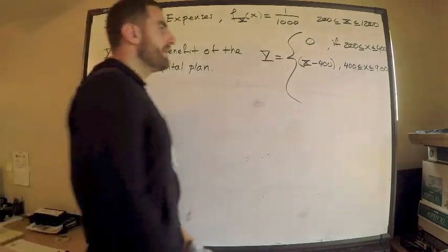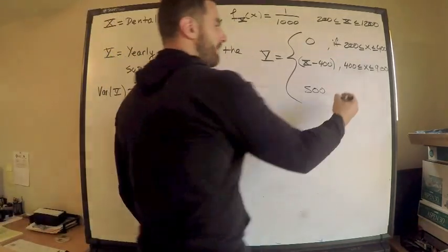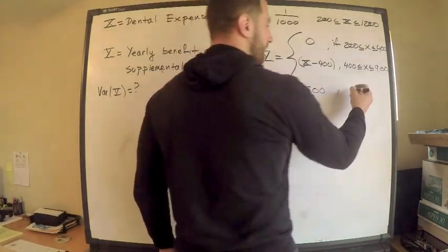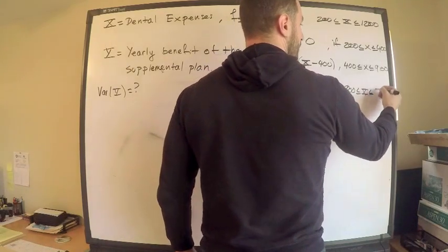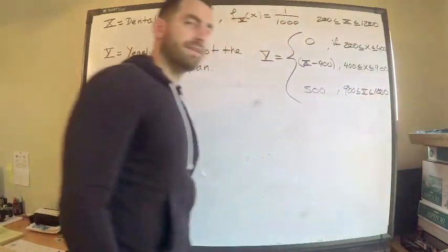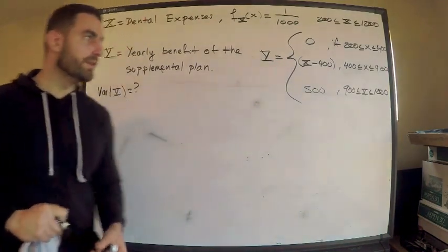All right. That looks good. And then anything after that, we'll only pay 500. So if you have expenses that exceed 900, we're not going to pay more than 500. So 900 up to 1200, because the expenses, well, the dental plan, dental expenses in general, don't exceed 1200.